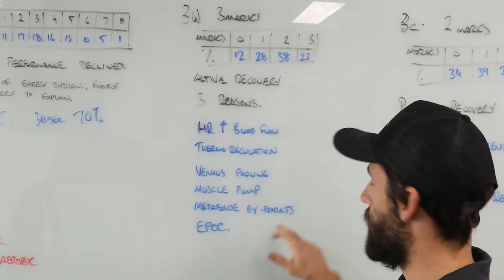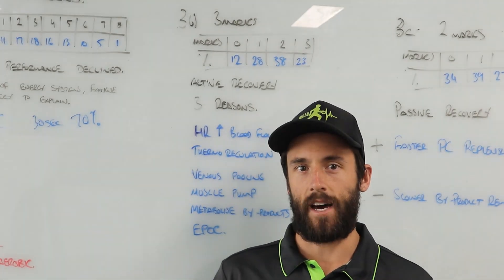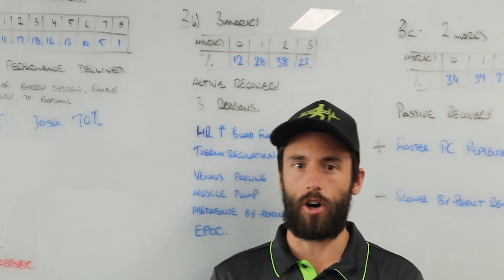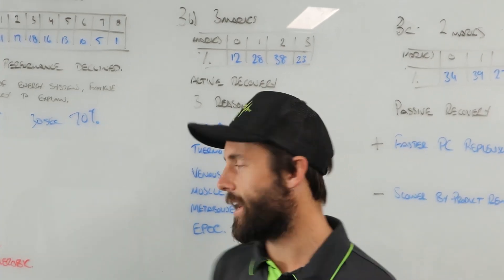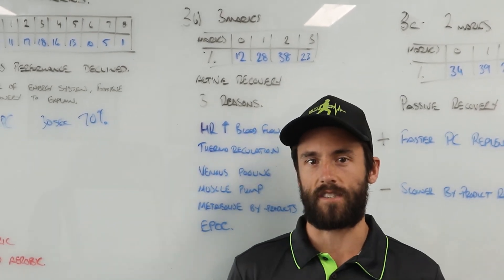The next part of this question was reasonably straightforward. So 3b says at the conclusion of this phosphate recovery test, athletes will undergo an active recovery. Give three reasons why an active recovery will benefit these athletes.